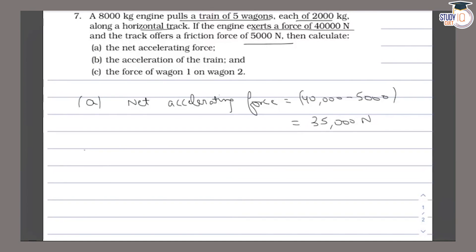Then we have to find the acceleration of the train. To find the acceleration, we use force equals mass into acceleration. We need the total mass of the train, which is the engine mass plus the wagons mass.